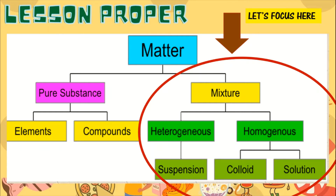Mixture has two subcategories: heterogeneous and homogeneous. Homogeneous has two categories — colloid and solution — while heterogeneous has one category known as suspension.